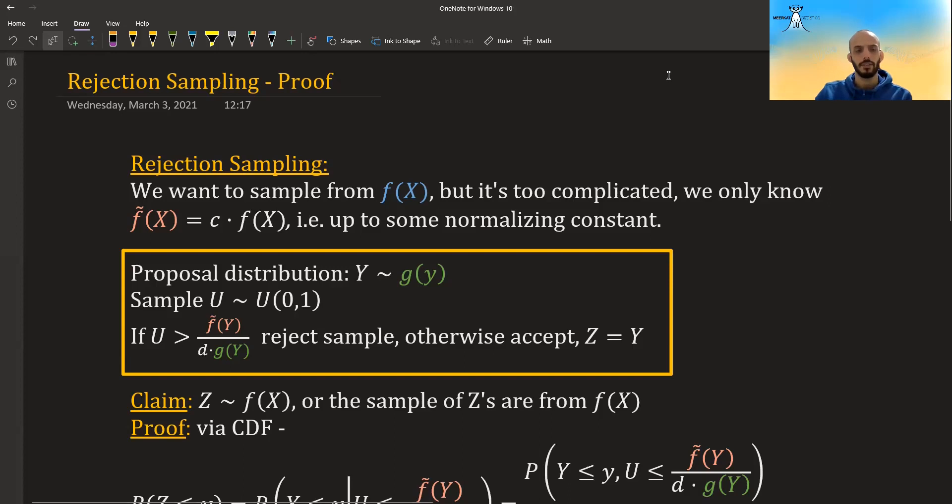Hi. In this video, I want to go over a quick proof of the rejection sampling algorithm. So just a reminder, why do we want to do rejection sampling?